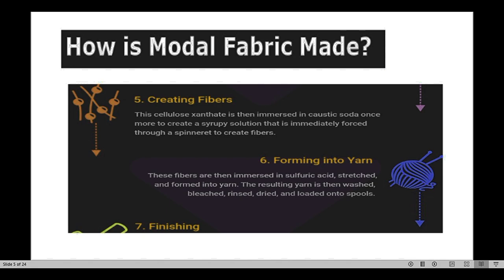The sixth step is forming into yarn. These fibers are then immersed in sulfuric acid, stretched, and formed into yarn. The resulting yarn is then washed, bleached, and dried, and loaded onto spools.